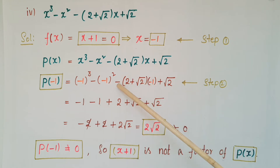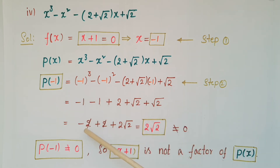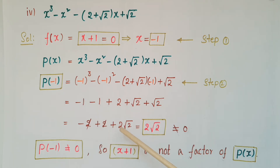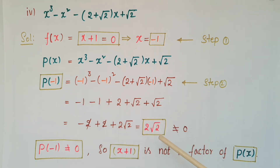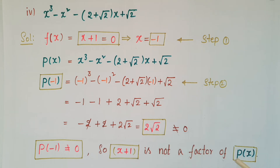Continuing the calculation: minus 1 minus 1 is minus 2, then minus 1 times (2 + √2) gives plus 2 plus √2, plus another √2. So minus 2 plus 2 plus 2√2 — the minus 2 and plus 2 cancel, leaving 2√2. So p(minus 1) equals 2√2, which is not equal to 0. Therefore, x plus 1 is NOT a factor of this polynomial p(x).